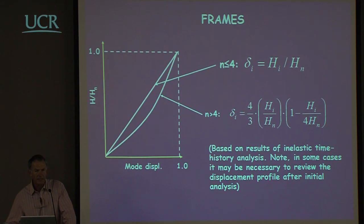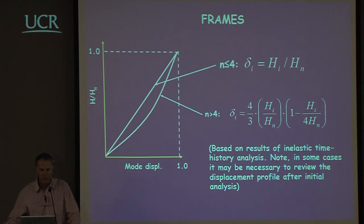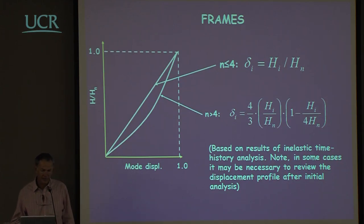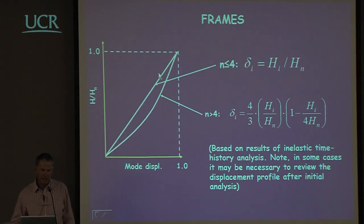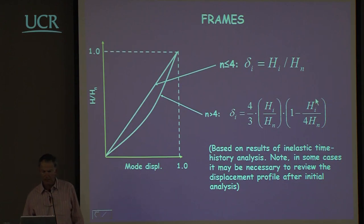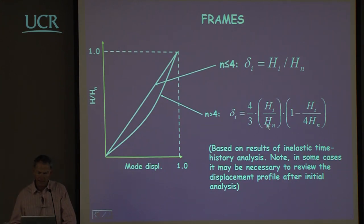For frames, based on large numbers of inelastic time history analyses carried out by graduate students particularly in Italy, New Zealand, and the United States, it's been established that the dimensionless mode shape is rather simple for typical regular buildings. If the structure is four storeys or less, we can use a linear mode shape and that's perfectly adequate. For structures taller than four storeys, the mode shape is parabolic, governed by this dimensionless expression where hi is the height of level i and hn is the height of the top storey.